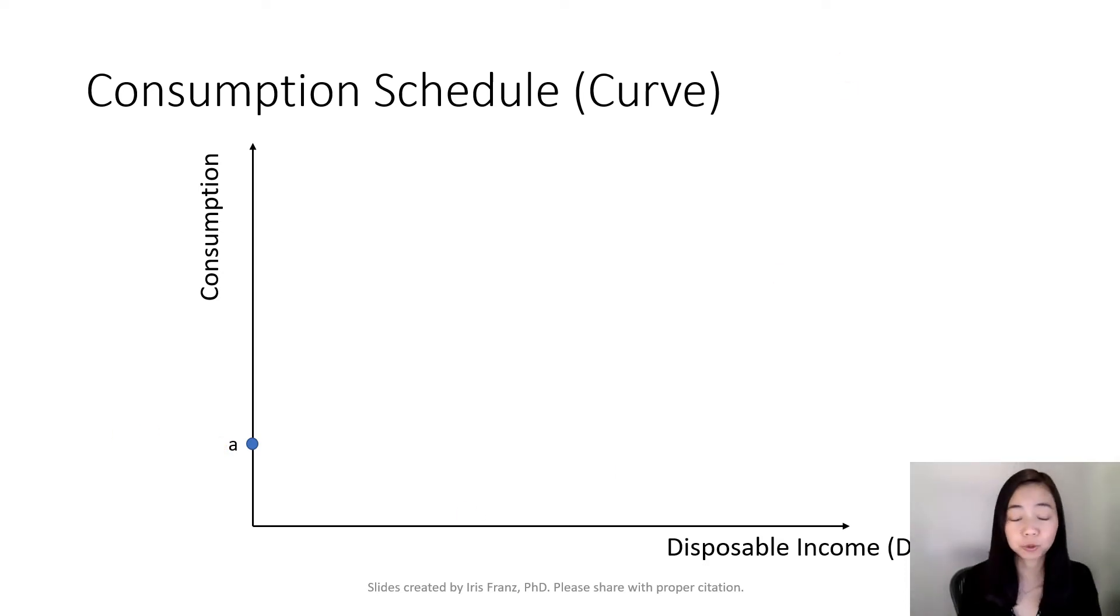Suppose we start to have some positive disposable income. That means your consumption is also going to go up. Now suppose your disposable income continues to increase, then your consumption will continue to go up. Connecting the points, you will be able to sketch your consumption schedule or your consumption curve.